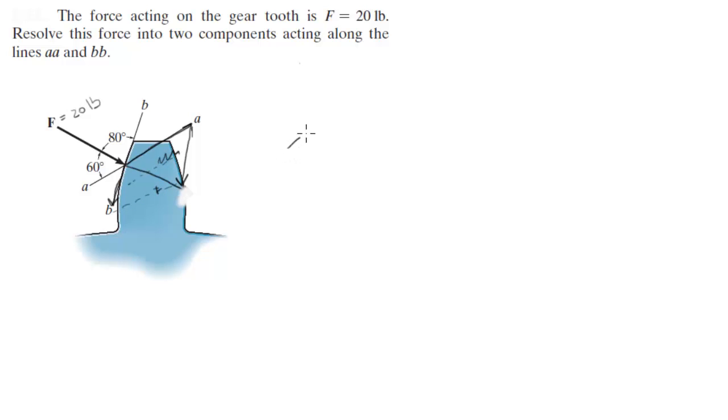So this triangle I'm going to redraw it over here. This is the A component of the force, this is the force, and this is the B component of the force. Now we know that this angle is 60 degrees. See the angle right here, same as the angle right here, the angle right here forms between two 60 degrees.